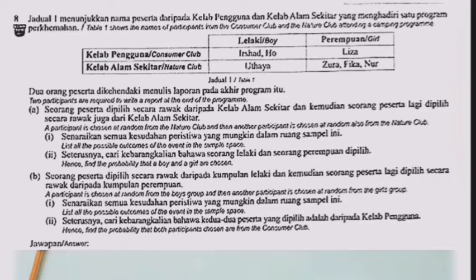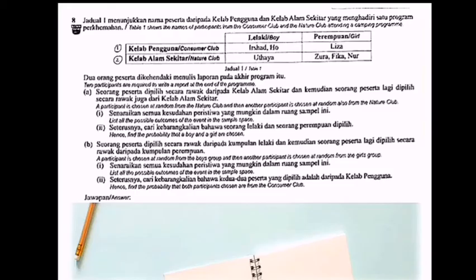So now a participant is chosen at random from the Nature Club, and then another participant is chosen at random also from the Nature Club. Part A: list all the possible outcomes of the event in the sample space.